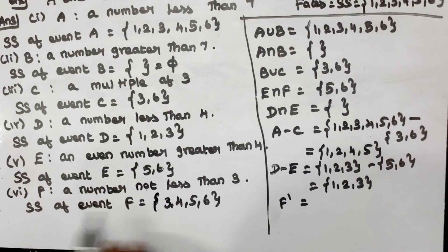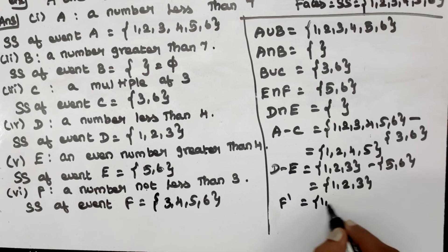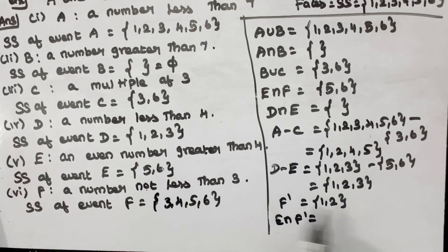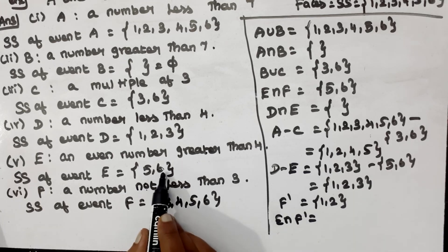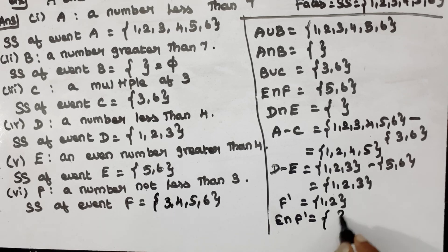F is 3, 4, 5, 6. F is 1, 2. So next is E intersection F: E is 5, 6 and F is 1, 2. So this is the answer for question number 2.